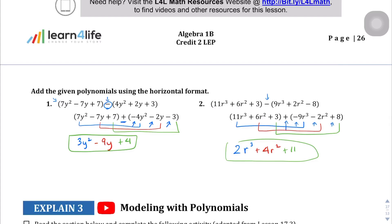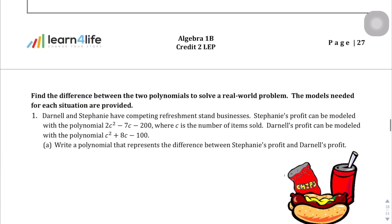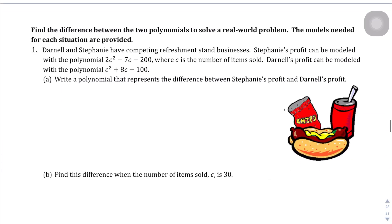Those are the first two questions. On the next page, we're going to be dealing with a context here — find the difference between two polynomials to solve a real-world problem. Darnell and Stephanie have competing refreshments businesses. Stephanie's profit can be modeled with the polynomial 2c squared minus 7c minus 200. Darnell's profit can be modeled as c squared plus 8c minus 100. We want to know the difference, so we're subtracting. We're going to do this one vertically: 2c squared minus 7c minus 200.